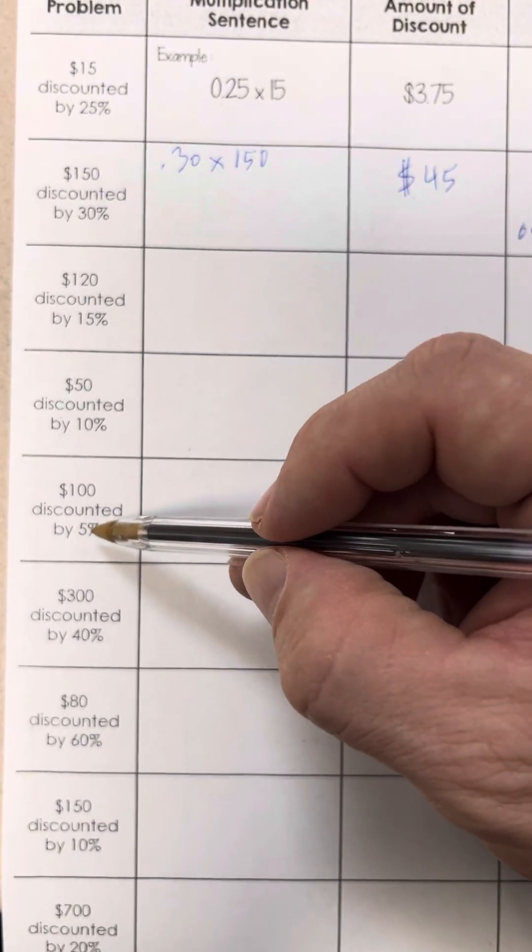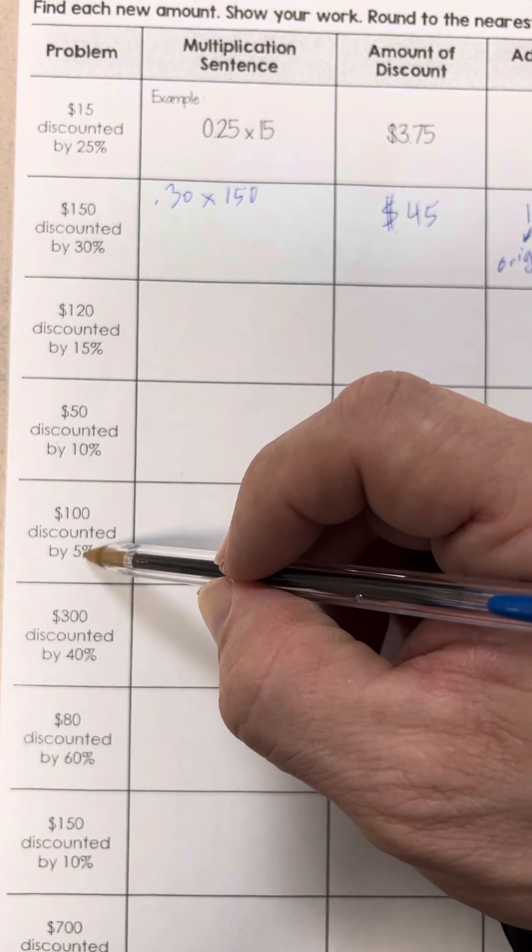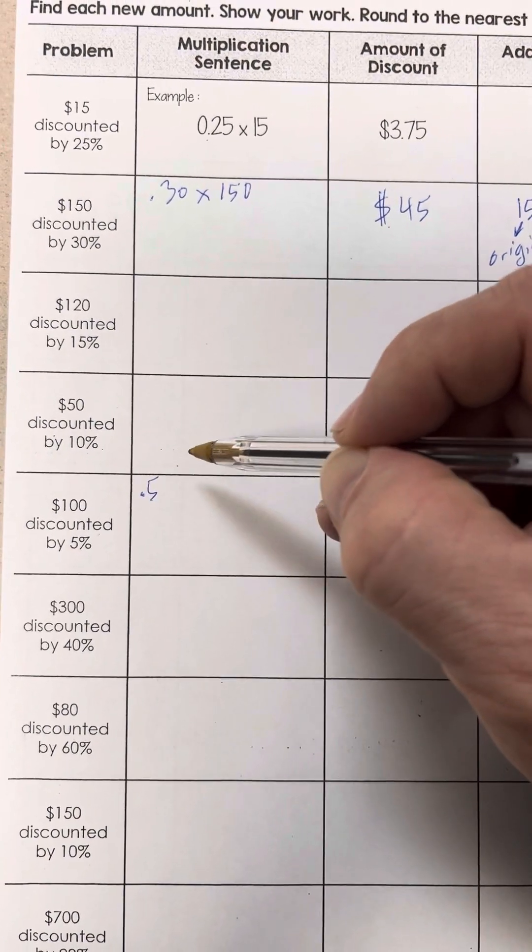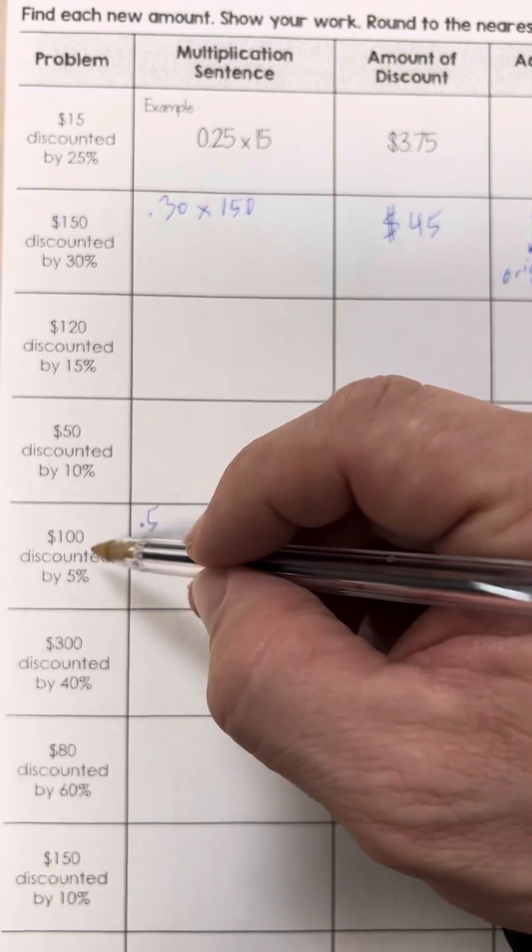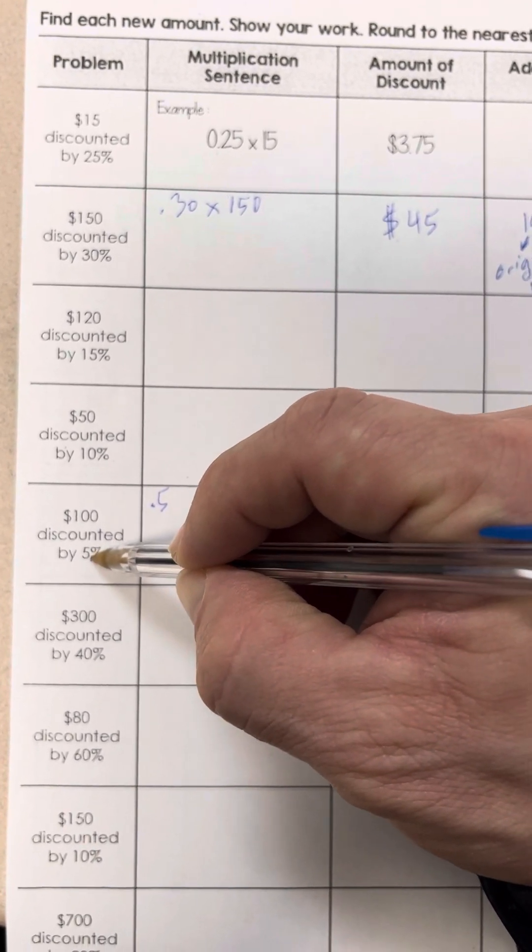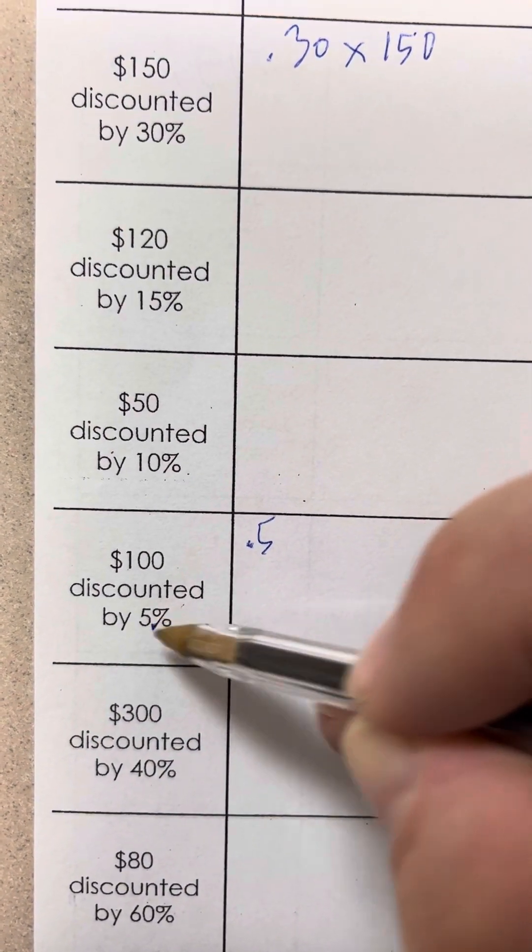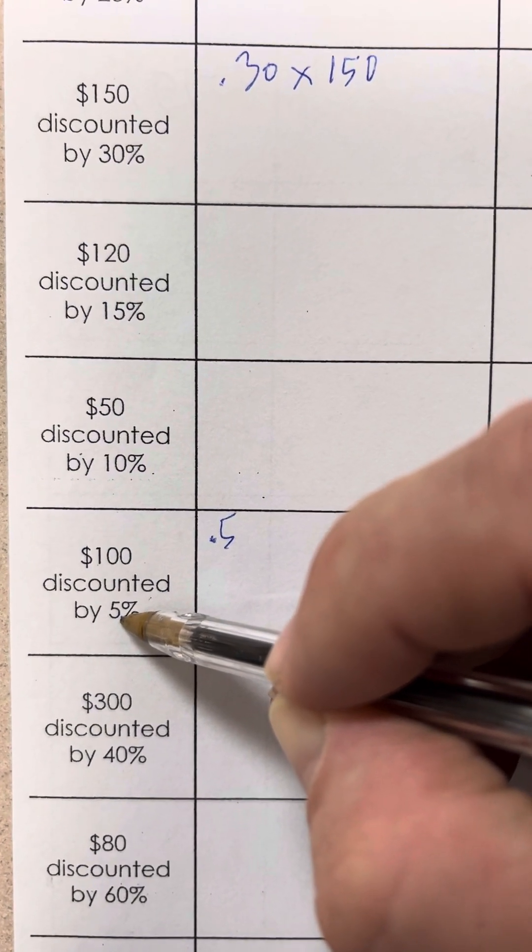The mistake that I'm seeing is that some people are taking 5%, and as a decimal, they're writing 0.5. That's not correct. As a decimal, remember, our decimal point is right here, right to the right of the 5. Let me zoom in just a little bit. How many times do we have to move our decimal place to the left to change it to a decimal?